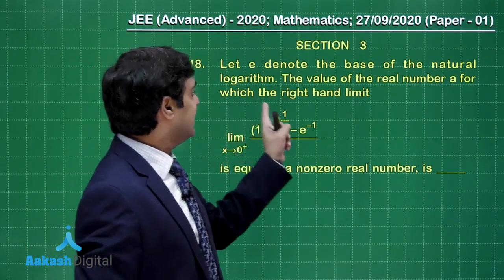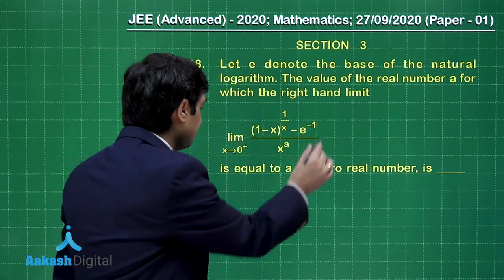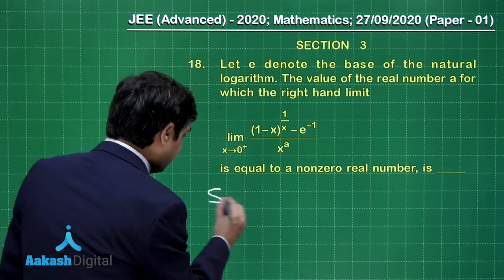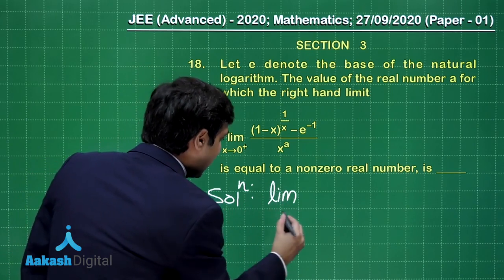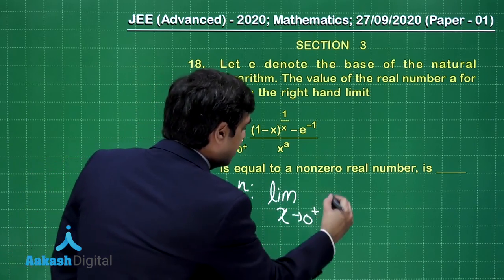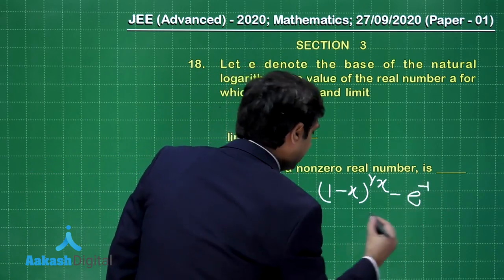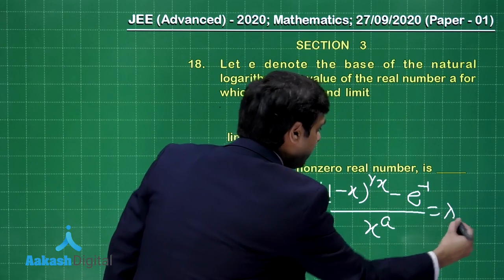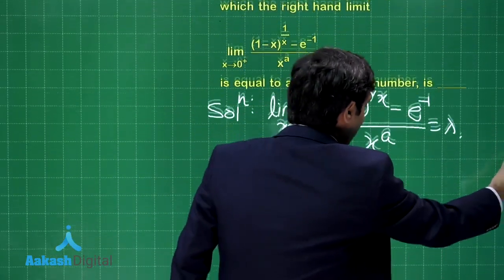So moving on to question number 18. It says the value of real number A for which the right hand limit of this one is equal to a non-zero real number. Let us understand. Limit x approaching to 0 plus, 1 minus x raised to the power 1 by x minus e minus 1 upon x to the A.